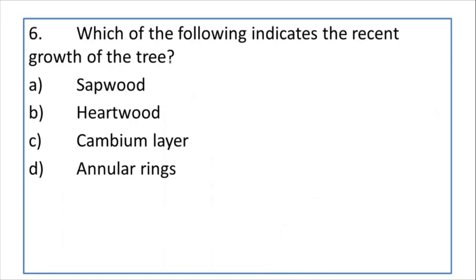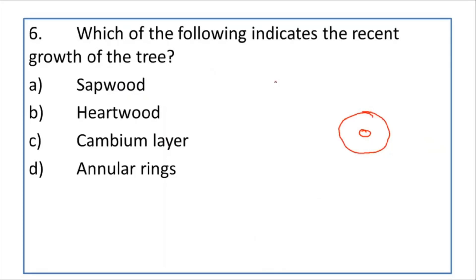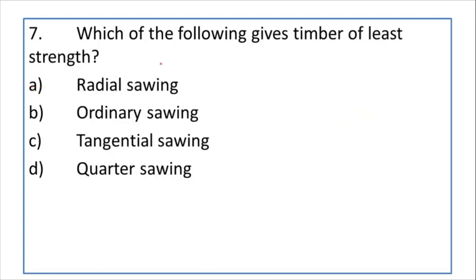Which of the following indicates the recent growth of the tree? In the timber cross section, sapwood grows first and is later converted into heartwood. If there is more sapwood, the timber is growing recently. So sapwood indicates the recent growth of the tree. Note: the reason for the growth of the tree is the cambium layer, but what indicates recent growth is the sapwood.